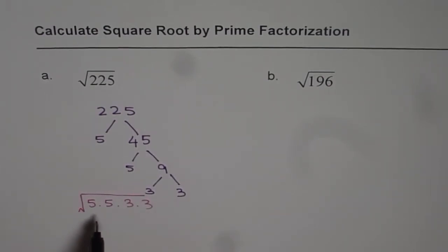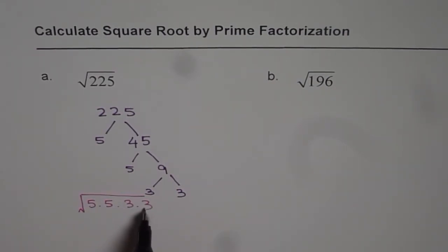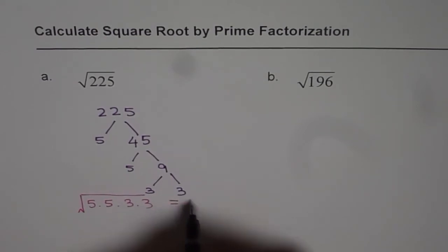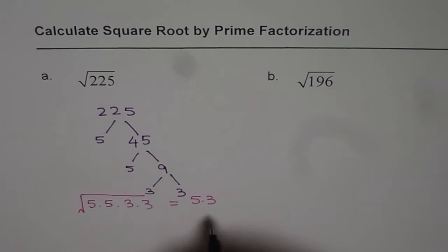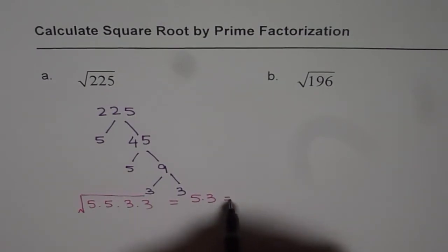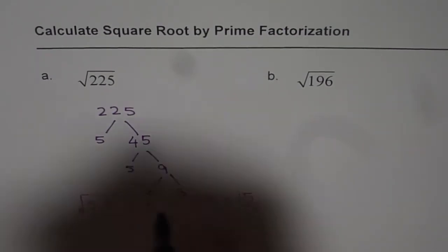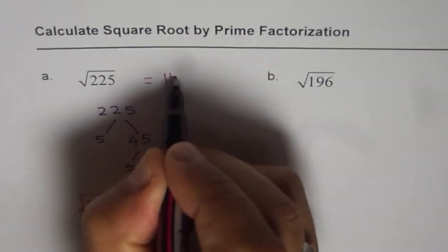Clearly, since it is 5 squared, the square root of 5 squared is 5, and this is 3 squared, square root of 3 squared is 3. So we can write this as 5 times 3, and therefore we get our answer as 5 times 3, which is 15. Square root of 225 is 15.